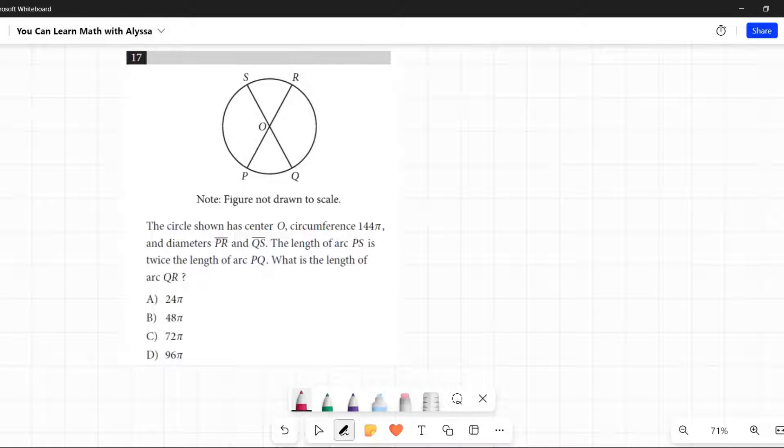The circle shown has center O, circumference of 144π, and diameters PR and QS. So they're telling us these are straight lines going through the center. That's good. The length of arc PS is twice the length of arc PQ.